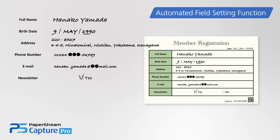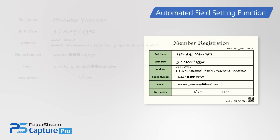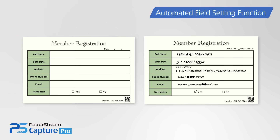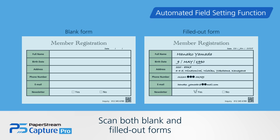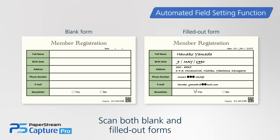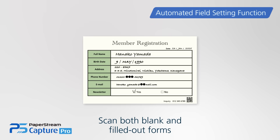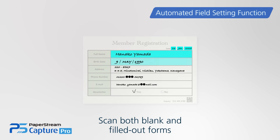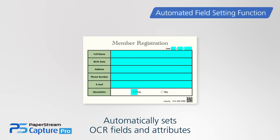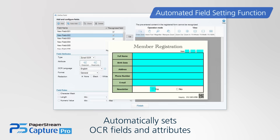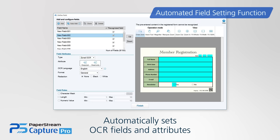PaperStream Capture Pro extracts text data on forms with a high level of accuracy. The automated field setting function automatically detects OCR fields based on the entered characters when scanning both blank and filled-out forms. It allows OCR to be quickly applied even when new form layouts are introduced.